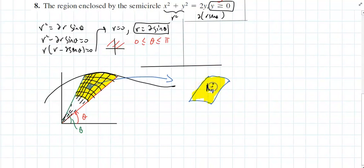This is r sub ij. This right here is the change of r, and this is kind of like the length, but it's an arc length. We know that s equals r times theta, provided theta is in radians. That's the arc length.